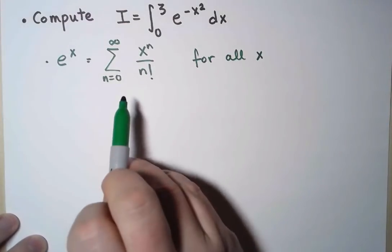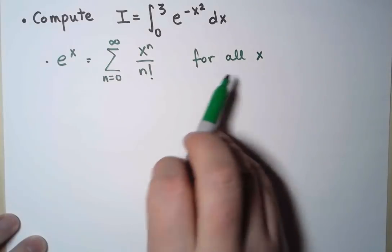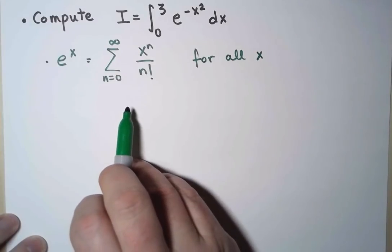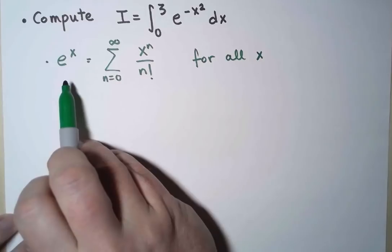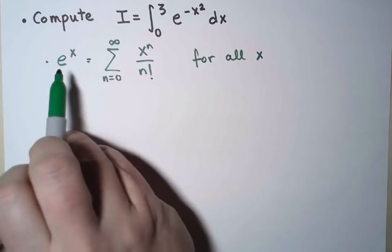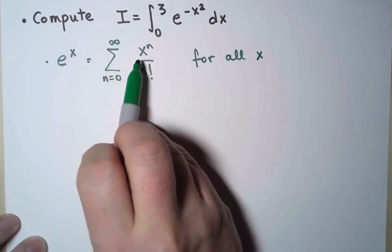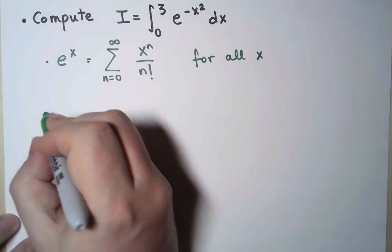And we know this is valid for all real numbers x. Now, since it's valid for all real numbers x, there is no problem with the domain. And now I want the exponential of minus x squared. So instead of using x as the variable, I will use minus x squared as the variable everywhere.